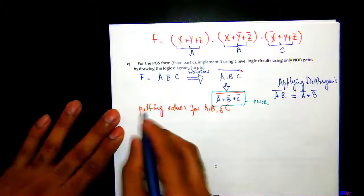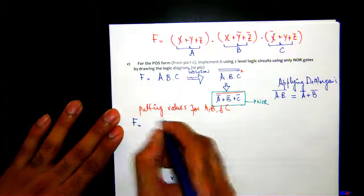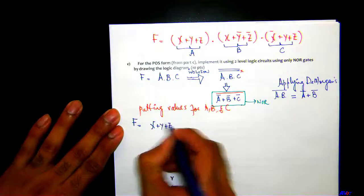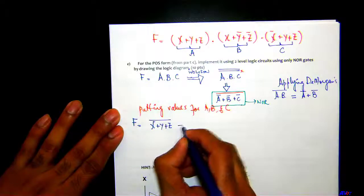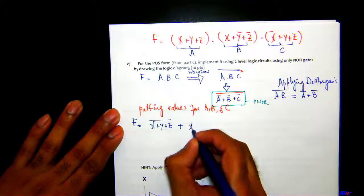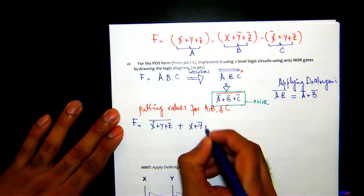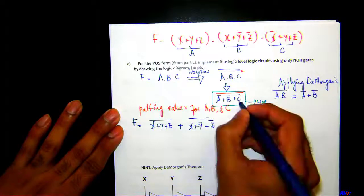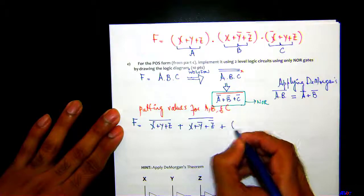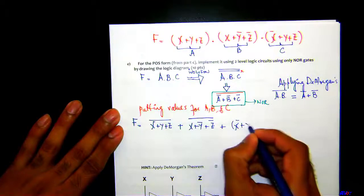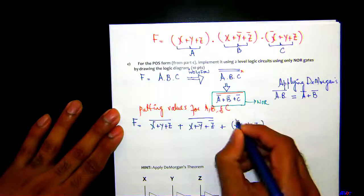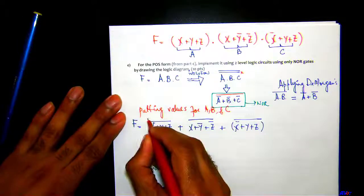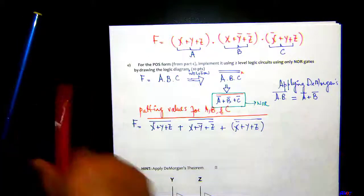So I get F = (A̅)—A is X+Y+Z—A̅ + (B̅)—B is X+Y̅+Z̅, bar on the whole thing—+ (C̅)—C is right here X̅+Y+Z, bar on the whole thing—and then I have this bar on this very whole thing right here.